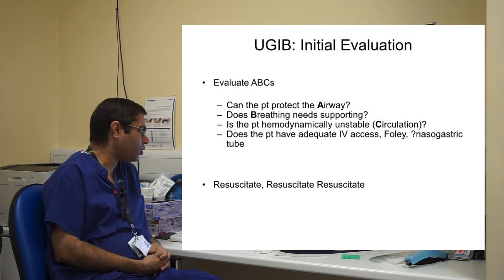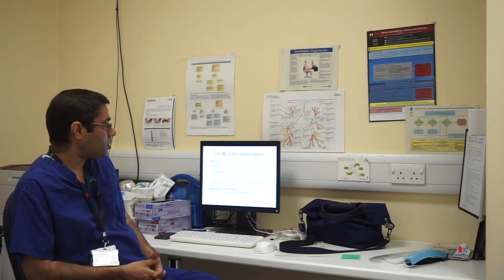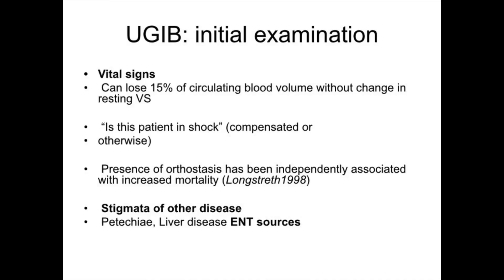Initial evaluation should be like any patient assessment. Can the patient protect the airway? Is the patient having haematemesis or nosebleeds — is the airway protected and does it need urgent protection? Can the patient breathe or does the patient need breathing support? Is the patient haemodynamically stable? Vitals including pulse, blood pressure, temperature, oxygen saturation, and respiratory rate are extremely important. Make sure the patient has two large-bore IV cannulas and a urinary catheter to monitor urine output. The basic initial focus should be: assess, resuscitate, resuscitate, resuscitate. Patients can lose about 15% of their circulating volume without any change in vital status.